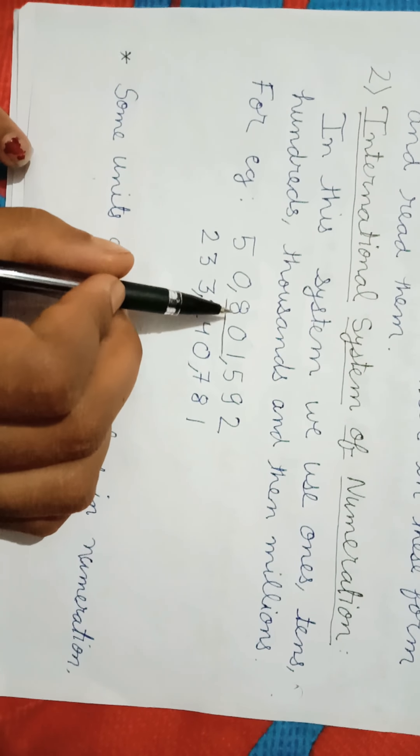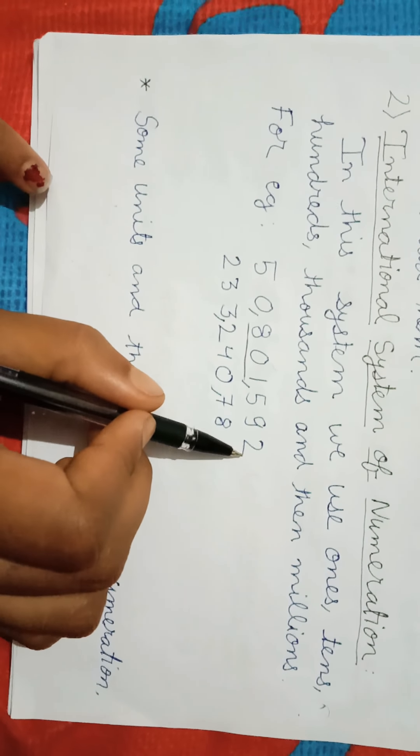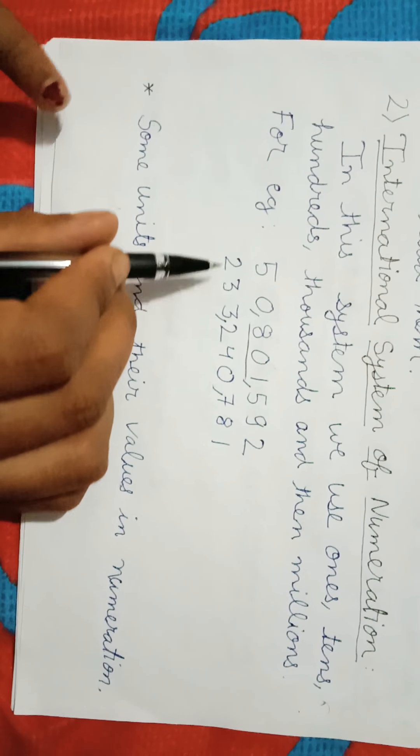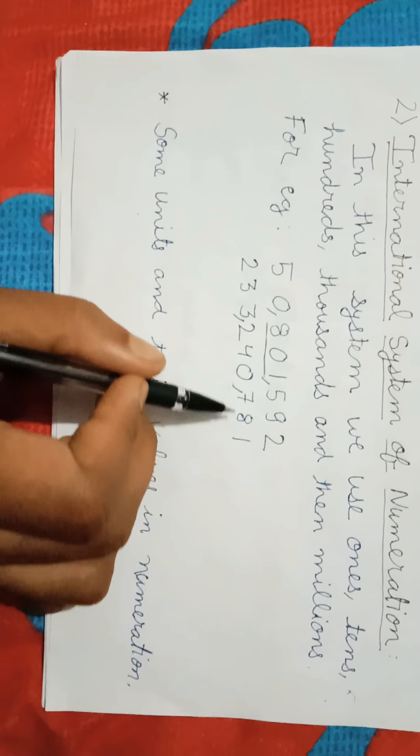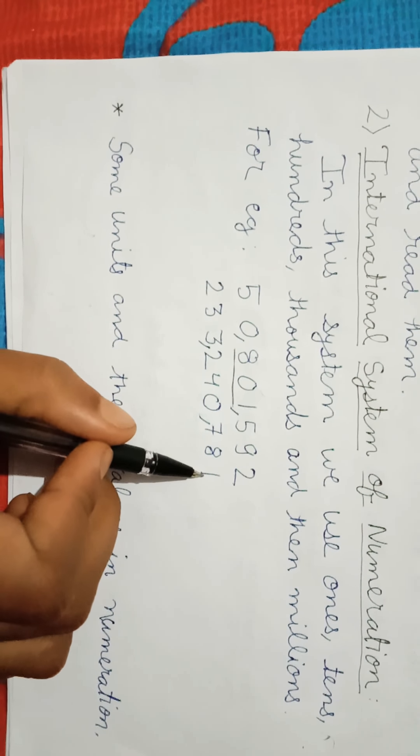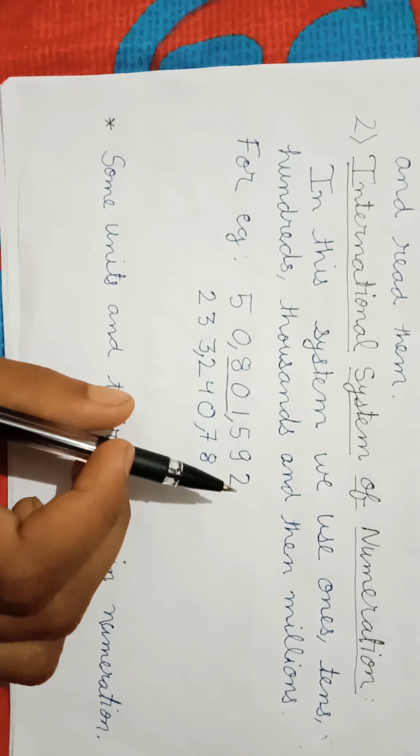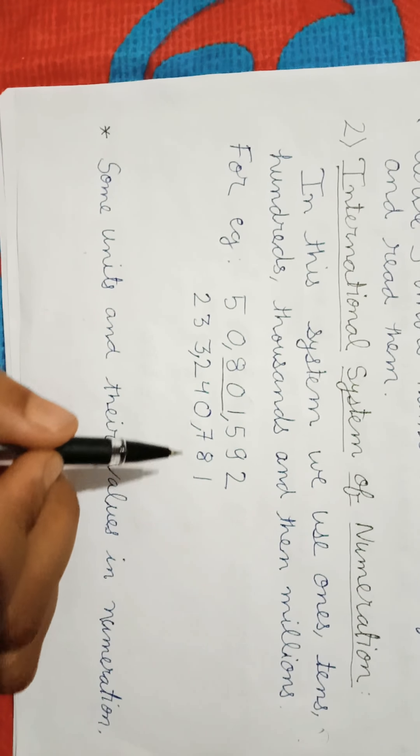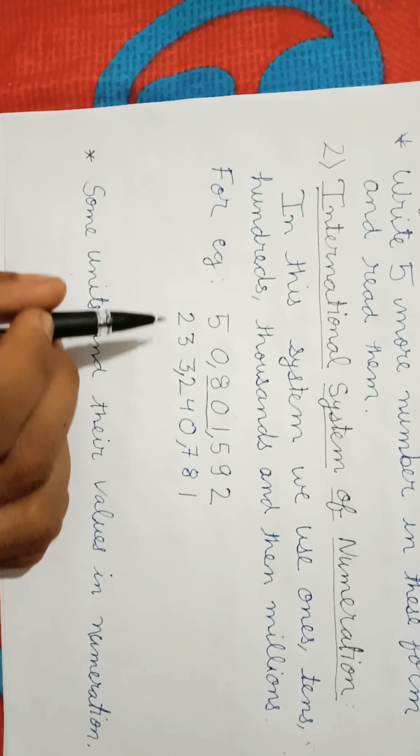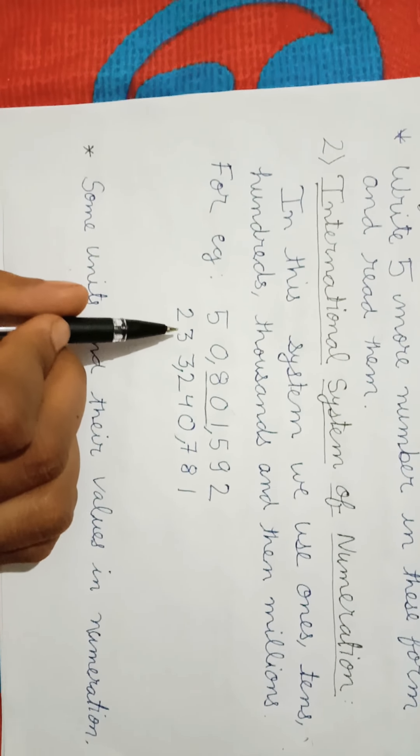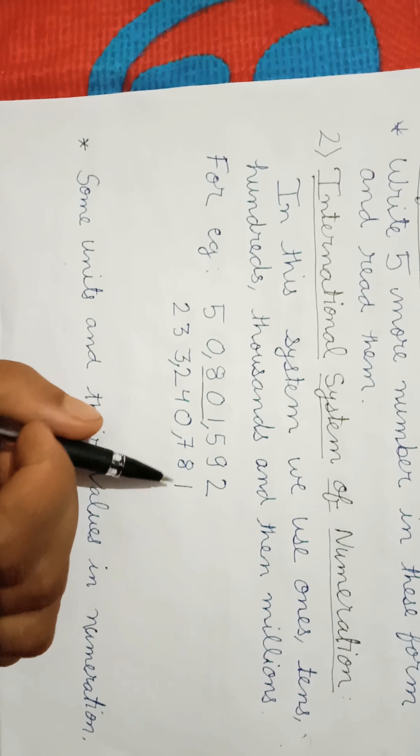Next example is 233240781. Here we apply our first comma from three digits from the right side, then again three digits, then again three digits. In international system of numeration we always apply commas after three digits. And it is read as two hundred thirty-three million, two hundred forty thousand, seven hundred and eighty-one.